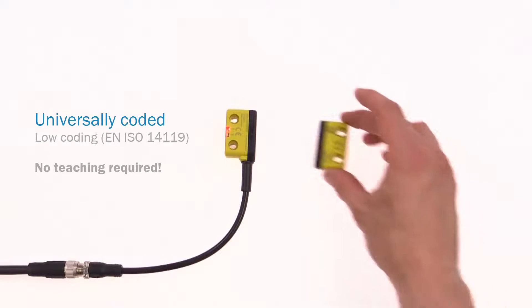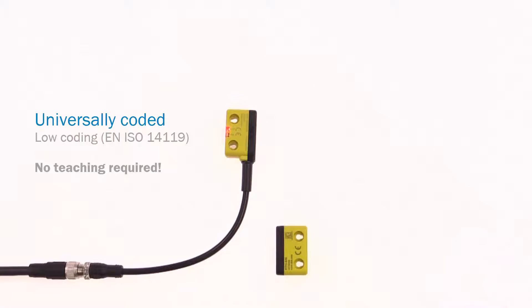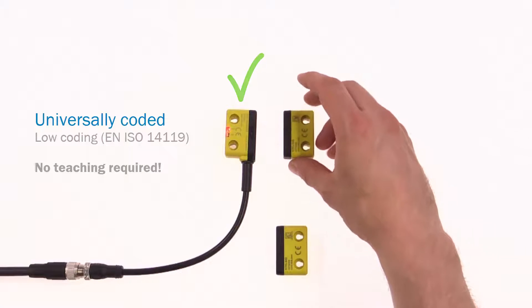After the self-test, the universally coded sensor is ready to work and will accept every STR1 actuator.